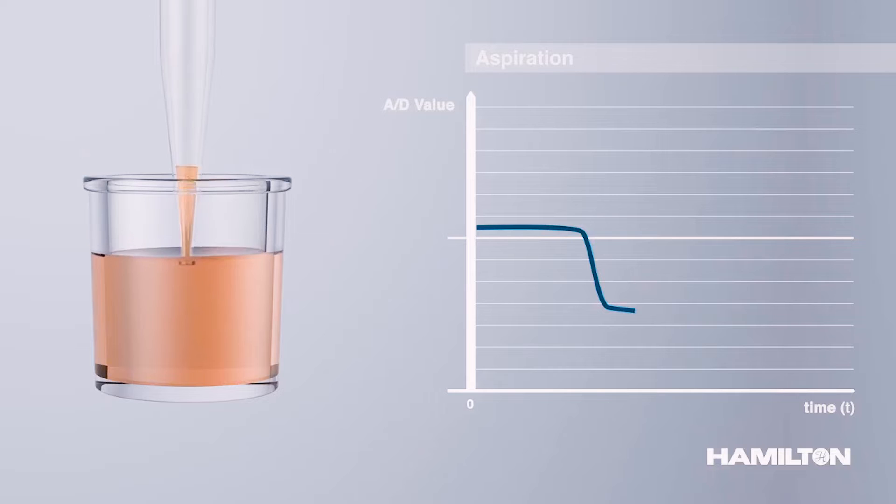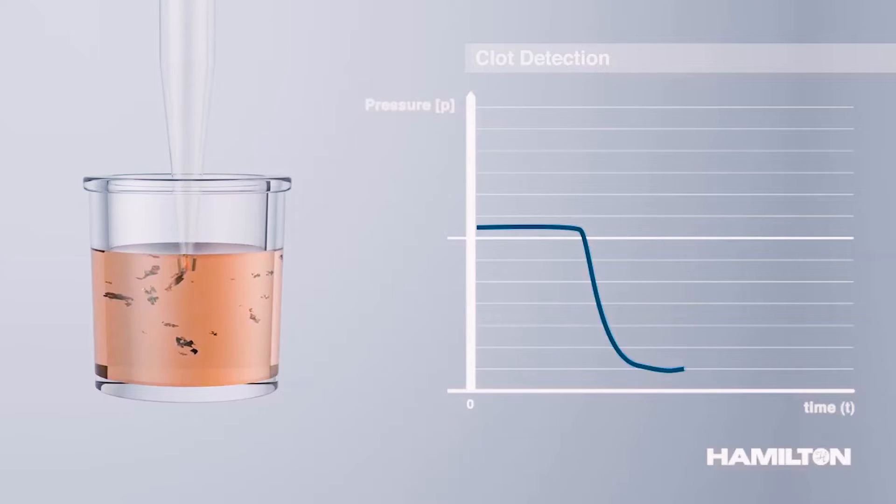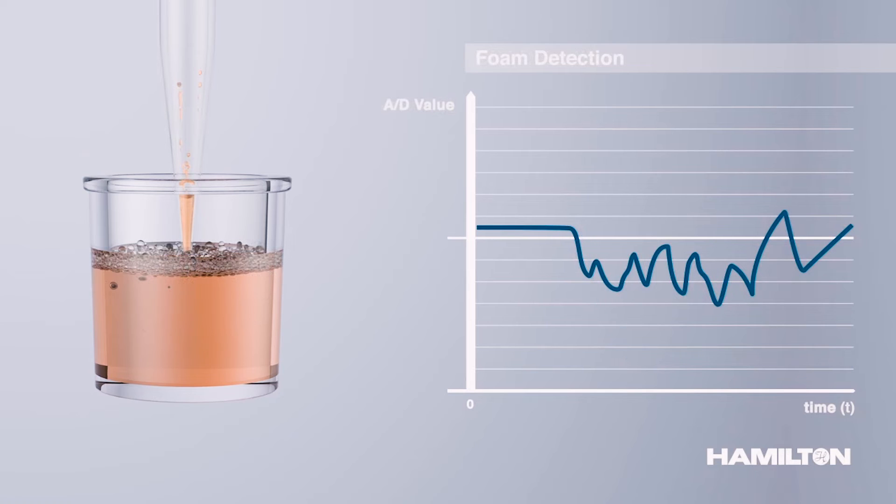Monitored air displacement checks for pressure changes during the aspiration process by enabling pressure sensors that are built in the Microlab prep's pipetting heads. Monitored air displacement ensures that the aspiration of liquid is correct and notifies users of pressure changes that indicate clots, empty wells, and foam.